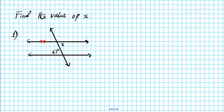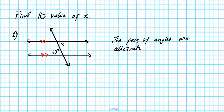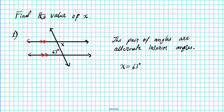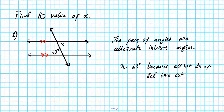The condition is this line is parallel to this line. The pair of angles are alternate interior angles. And what do we know about alternate interior angles? Alternate interior angles, when you have parallel lines cut by a transversal, are congruent. So that automatically tells us that x is equal to 63 degrees, because alternate interior angles of parallel lines cut by a transversal are congruent. So these two angles are congruent to each other.